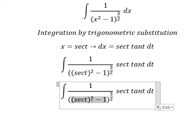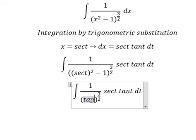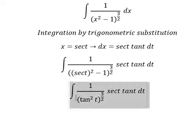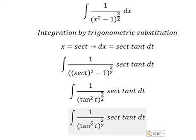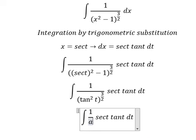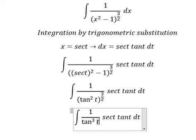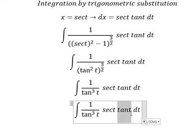This one is tan²t. The exponent 2 times 3/2 gives tan³t. So tan t and tan t, we can simplify.